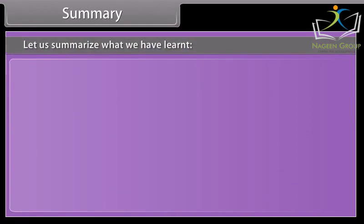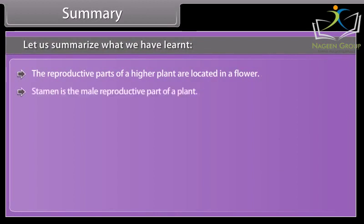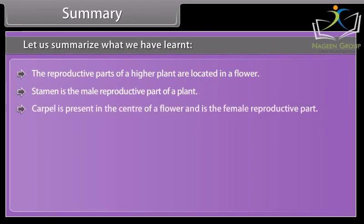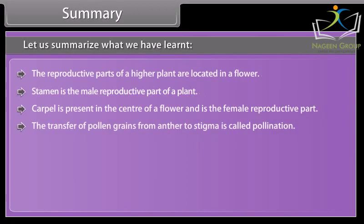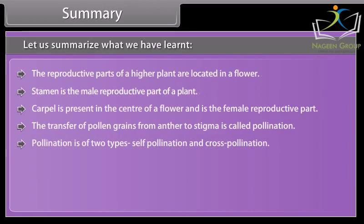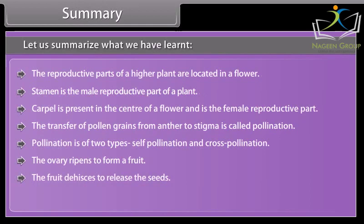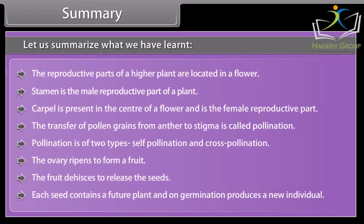Summary. Let us summarize what we have learned. The reproductive parts of a higher plant are located in a flower. Stamen is the male reproductive part of a plant. Carpel is present in the center of a flower and is the female reproductive part. The transfer of pollen grains from anther to stigma is called pollination. Pollination is of two types: self-pollination and cross-pollination. The ovary ripens to form a fruit. The fruit dehisces to release the seeds. Each seed contains a future plant and on germination produces a new individual.